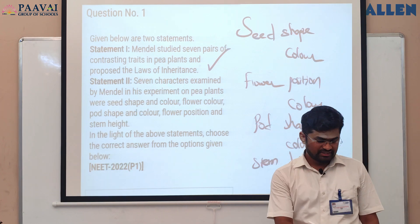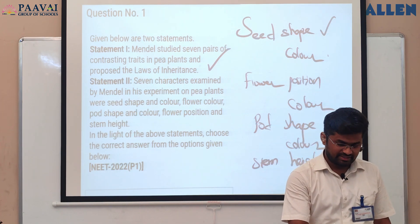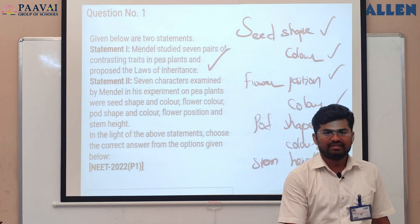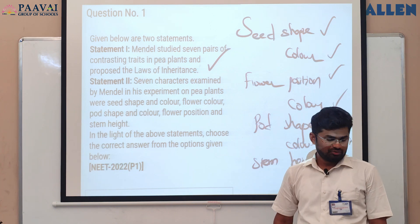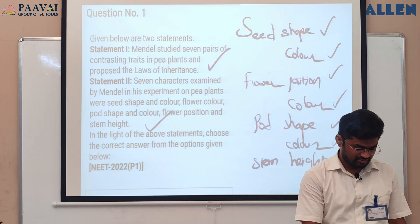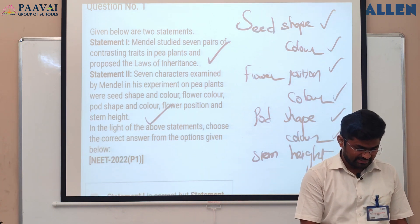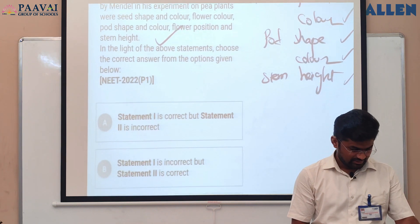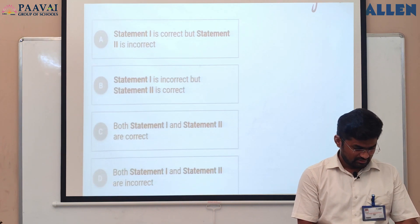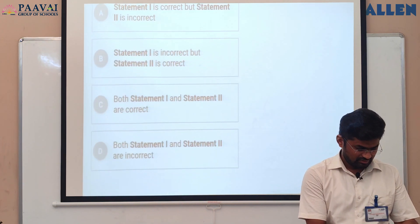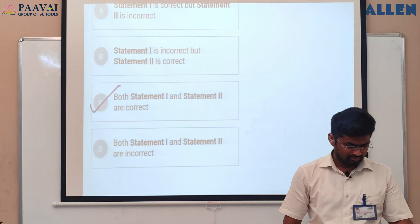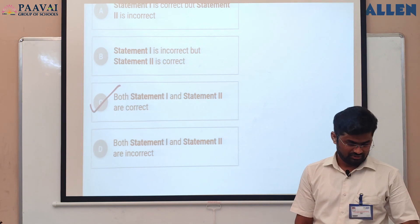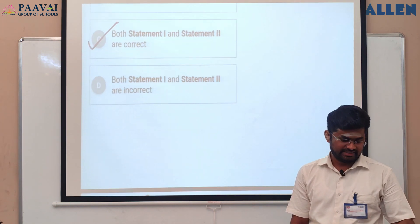These are the contrasting characters selected by Gregor John Mendel on Pisum sativum. Statement two is also correct. So here the correct answer is Option C — both statement one and statement two are correct.